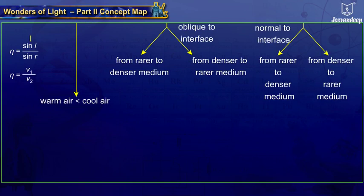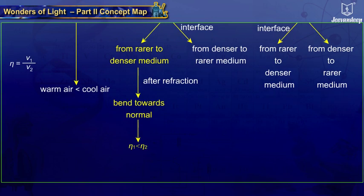When light travels from a rarer to a denser medium, the refracted ray bends towards the normal. The refractive index of the rarer medium is less than that of the denser medium. In this case, the angle of incidence is greater than the angle of refraction.